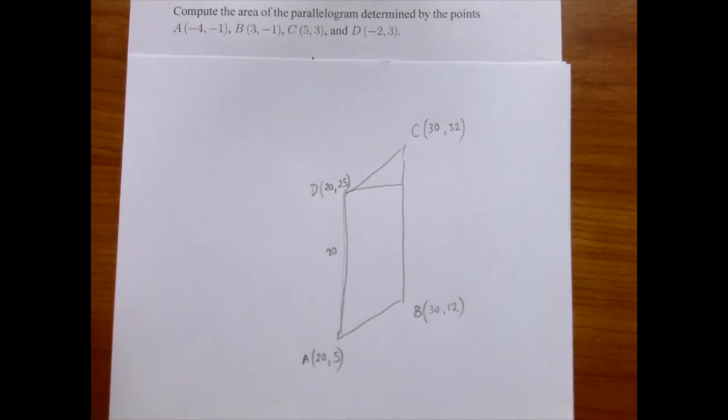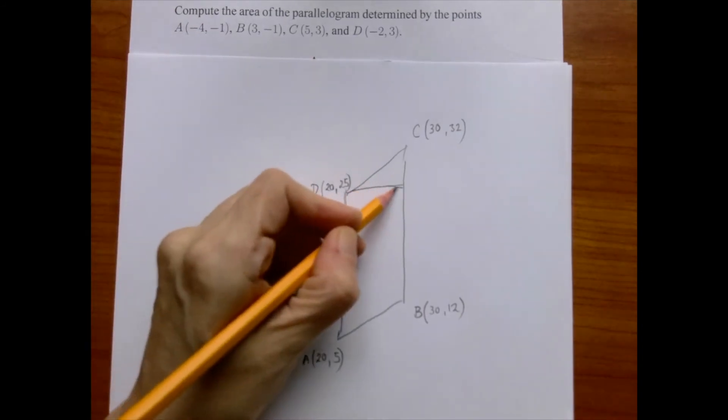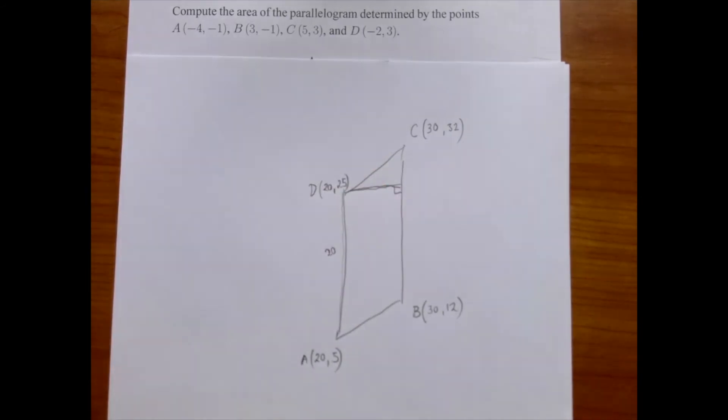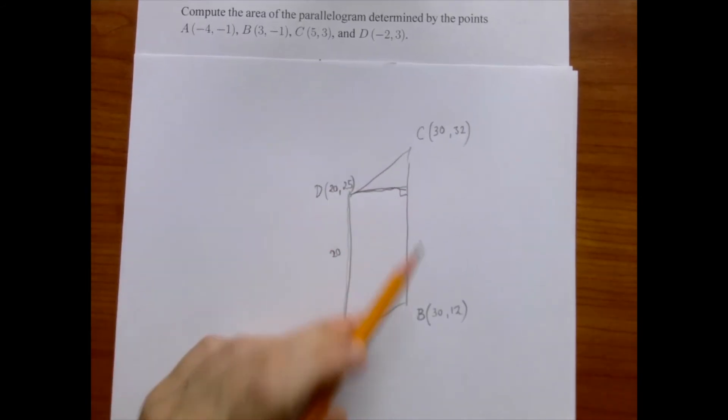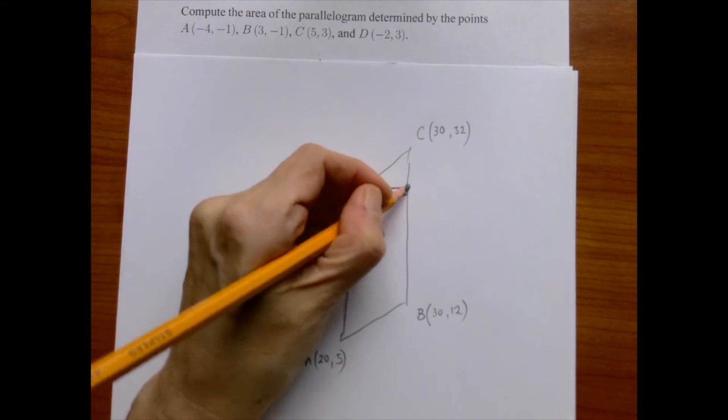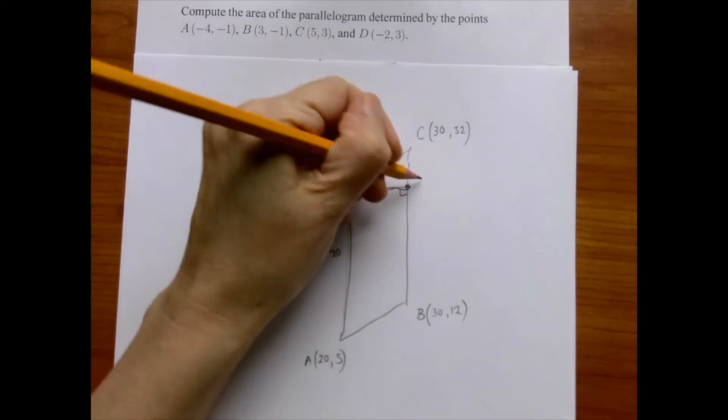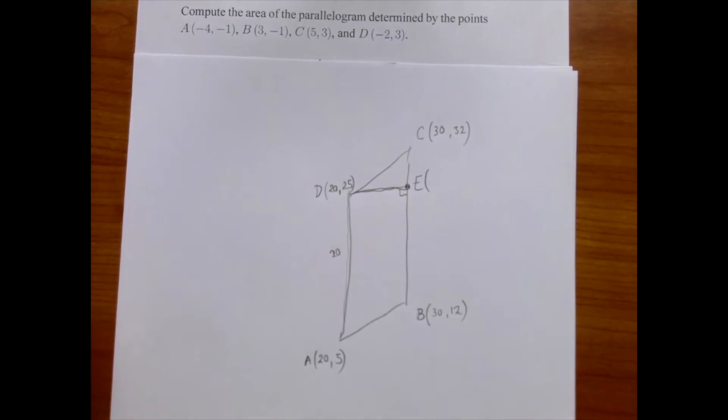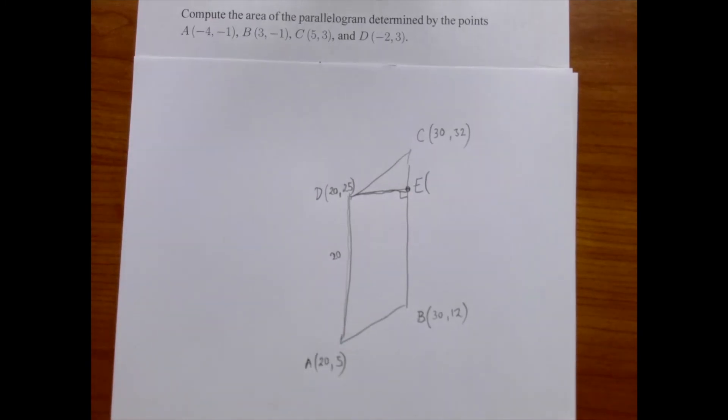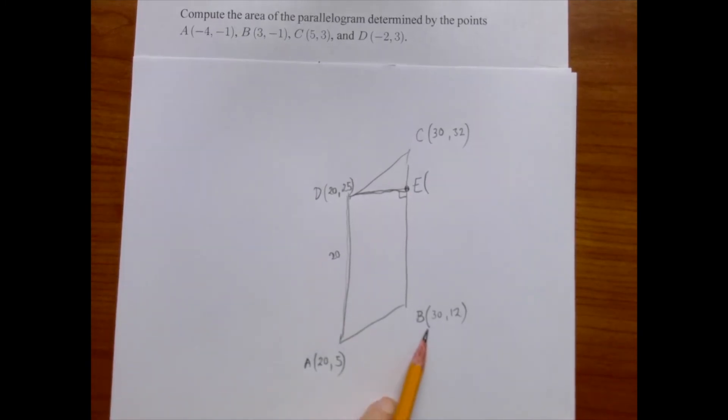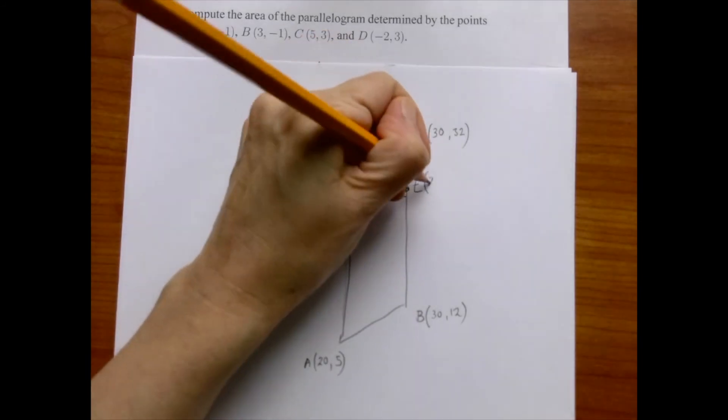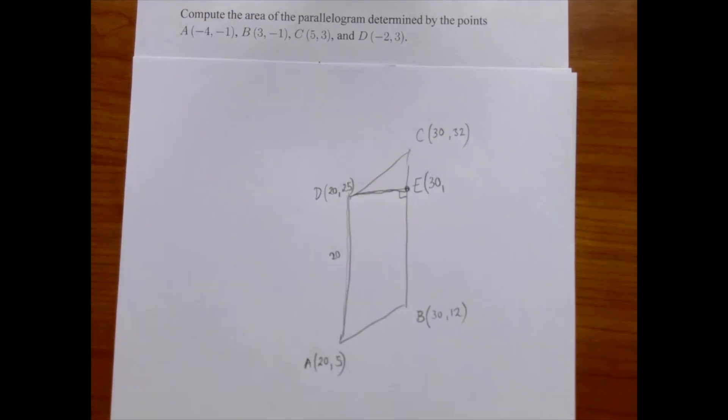Suppose we want to find this line segment's length. One thing we should do first is figure out the two coordinates of this point. Let's call this point E. Now, the first coordinate, the x-coordinate, should be the same as the x-coordinate of these two points, because it's on a vertical line with them. And the second coordinate should be the same as the second coordinate of this point, because this is a horizontal line.